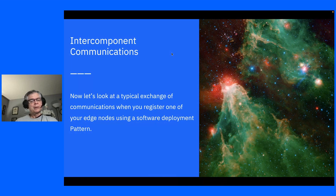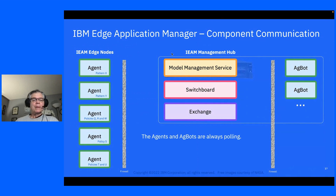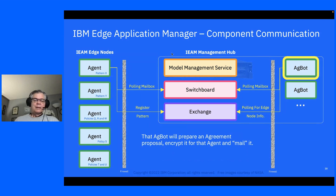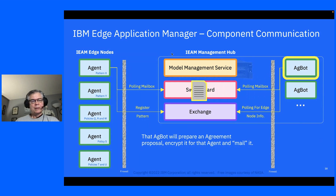Let's look at a typical exchange of communications when you register an edge node using a software deployment pattern. The agents and AgBots are polling, and when an agent is registered for a software deployment pattern, an AgBot responsible for that pattern will notice this. That AgBot will then prepare an agreement proposal, encrypt it for that particular agent, and mail it through the switchboard to the mailbox for that agent's public key — encrypted in a way that the switchboard and any other agent would be incapable of reading it, and only the agent whose public key is there can decrypt that message.